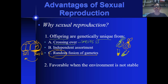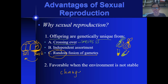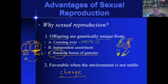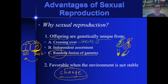Sexual reproduction is favorable when the environment is somehow not stable. Why? It's because the more unstable the environment, the more the tendency for an organism to change and adapt to its environment is also increased. If there's a change in environment, the organism will tend to adapt, the DNA will likely mutate, and you will produce another unique organism out of that environmental change. Sexual reproduction is only favorable when the environment is unstable.